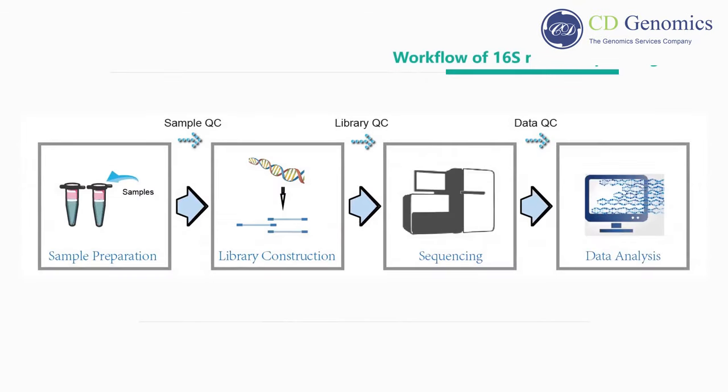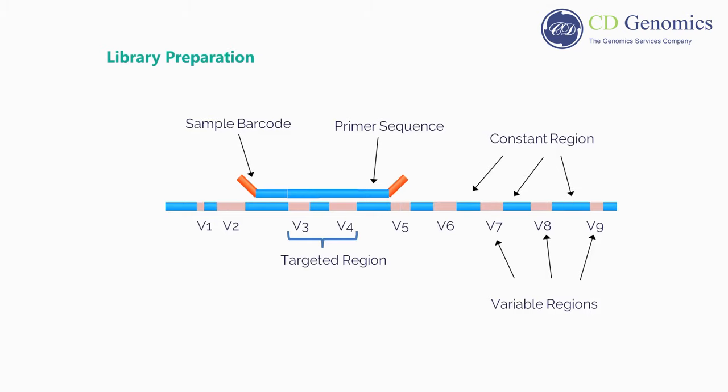A complete 16S sequencing workflow includes DNA isolation, library preparation, sequencing, and data analysis. After DNA isolation, the DNA is selectively PCR-amplified using primers targeting the 16S ribosomal RNA gene.